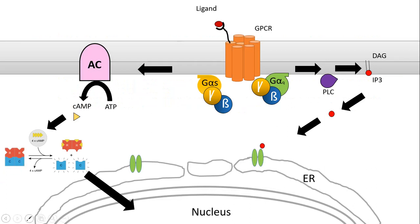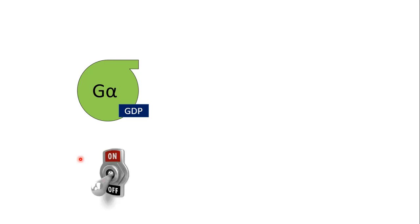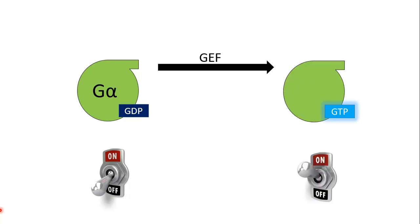Here is an overview of G protein signaling. When the ligand binds to the G protein coupled receptor — a seven transmembrane domain receptor — the G alpha subunit gets activated: its GDP (guanosine diphosphate) is replaced by GTP, which activates adenylate cyclase, and further signaling proceeds. In the inactive form, the G alpha subunit is bound to GDP — like an off switch. Upon ligand binding, guanosine nucleotide exchange factors (GEFs) help the G alpha subunit convert to the GTP-bound active conformation, which is reversed by GTPase-activating proteins (GAPs).